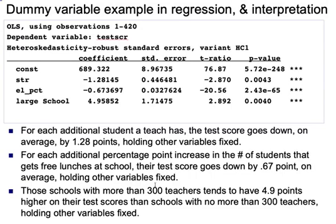Let me go through this regression and try and explain what happens when you use a dummy variable. In this case, we call it large school, the school with teachers greater than 300.